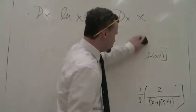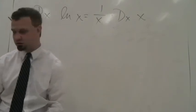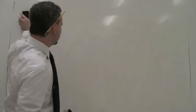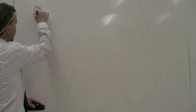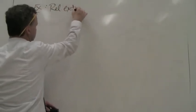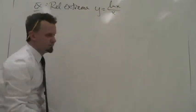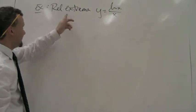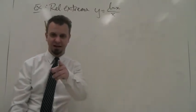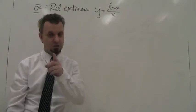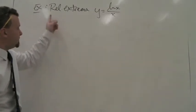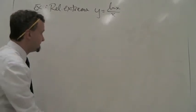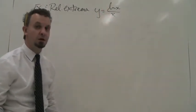Let's try to find some relative extrema — everybody loves relative extrema — for y equals ln(x) over x. To find relative extrema: find the derivative, set it equal to zero, find the critical points, then make your chart. This is something over something, so we need to use the quotient rule.